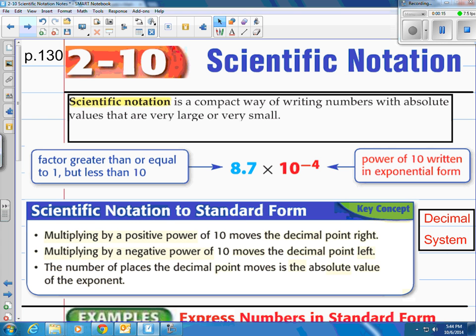So what's scientific notation? Sounds pretty intense. Well, it really isn't. It's pretty simple. Scientific notation is a compact way of writing numbers with absolute values that are very large or very small. Basically really large or very small numbers, you can write them in a compact space.